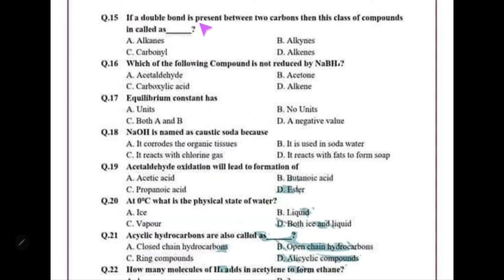If a double bond is present between carbon atoms, then this class of organic compound is called alkenes. That is choice C — a very easy question.